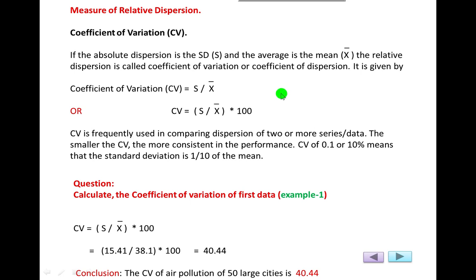The next topic is the measure of relative dispersion. Before this, you have used the measure of dispersion only. In measure of dispersion, we measure the variation of the data from mean — in standard deviation, we measure the variation from mean. In measure of central tendencies, you found central values using mean, median, and mode. But here we will compare the dispersion of two data. Measure of relative dispersion means finding or calculating the relative dispersion of two different data.